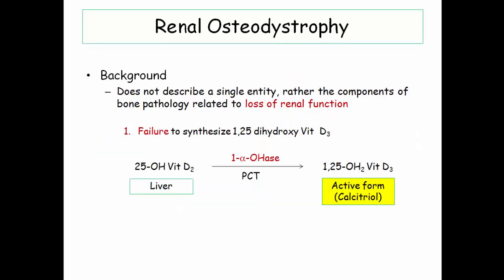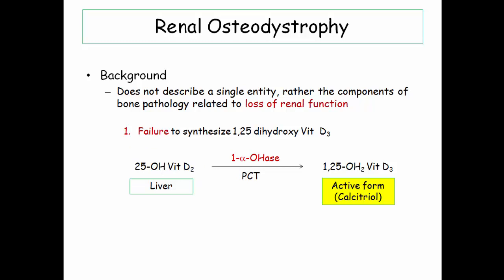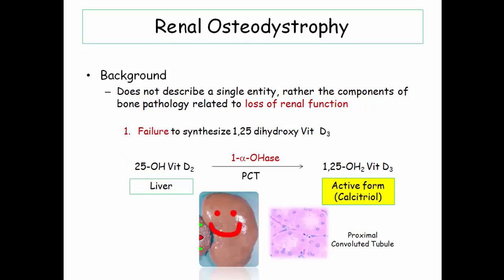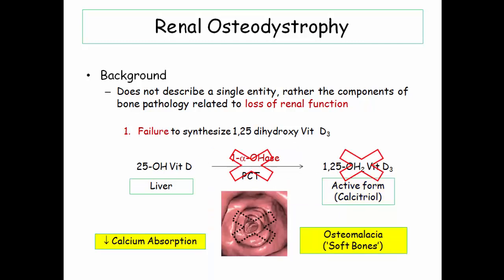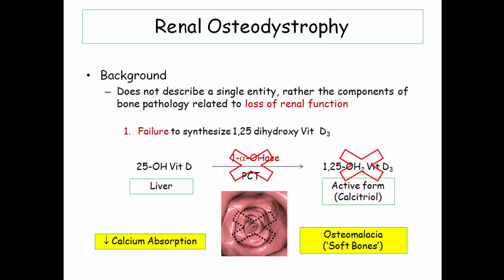What does vitamin D loss have to do with the kidney? 25-hydroxyvitamin D is synthesized in the liver and converted to its active form, 1,25-dihydroxyvitamin D, in the kidney. This reaction is mediated by 1-alpha-hydroxylase, which resides in the proximal convoluted tubule. The failing kidney lacks adequate 1-alpha-hydroxylase activity and thereby lacks activated vitamin D. The ultimate outcome of vitamin D deficiency is the failure of intestinal calcium absorption. No calcium means no bone mineralization — the bone is soft, characterized by fracture and pseudofracture, which are the hallmarks of osteomalacia.